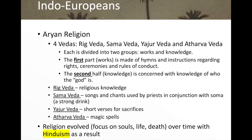The Rig Veda contains religious knowledge. The Sama Veda contains songs and chants used by priests in conjunction with soma, a strong drink. The Yajur Veda contains short verses said during sacrifices. And the Atharva Veda contains magic spells. So all four writings are each divided into a works and knowledge section.